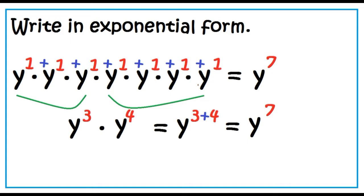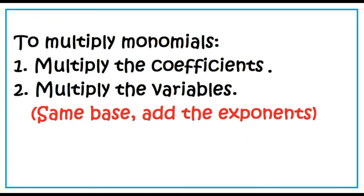What if the monomials have coefficients? To multiply monomials, multiply the coefficients, then multiply the variables. Remember that if they have the same base, add the exponents.